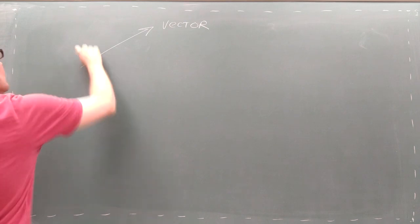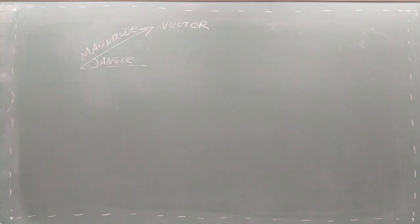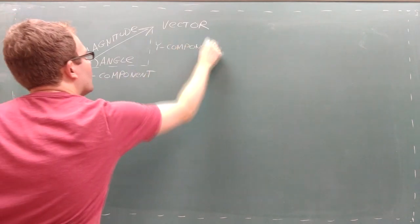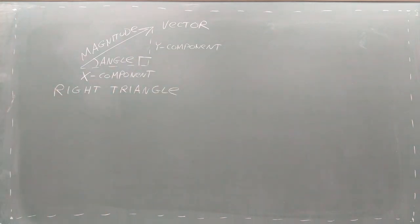Every vector has four pieces of information: a magnitude, an angle, an x component, and a y component. These four pieces of information allow you to draw the vector as a right triangle, and this right triangle helps you set up the relationships between these four values.